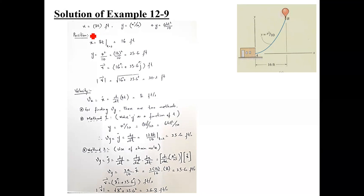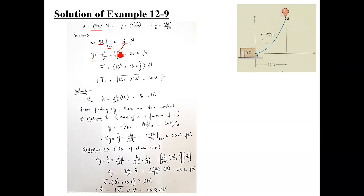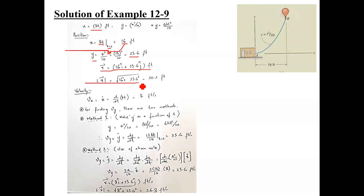First of all, let's talk about position. Since x is given to us as a function of t, you put t = 2 seconds, which gives x = 16 feet. Now y is already defined as a function of x, so you put x = 16 to get y = 25.6 feet. After 2 seconds, the position vector is x·i + y·j = 16i + 25.6j feet, giving a magnitude of 30.2 feet.